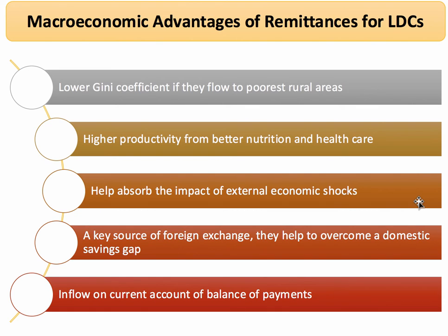For many developing nations, remittance incomes help to avoid or absorb the full impact of big external shocks. Many low-middle-income countries are highly dependent on just a handful of primary commodities — if the price goes down, export revenues and GDP suffer. Remittances can act as an absorbing mechanism for that. For many countries, remittances are a key source of foreign exchange — in other words, dollars. They help to overcome the domestic savings gap which is needed to fund investment. And for these countries, remittances do count as an inflow on the current account of a balance of payments — they're a source of primary income in addition to the value of exports of goods and services.